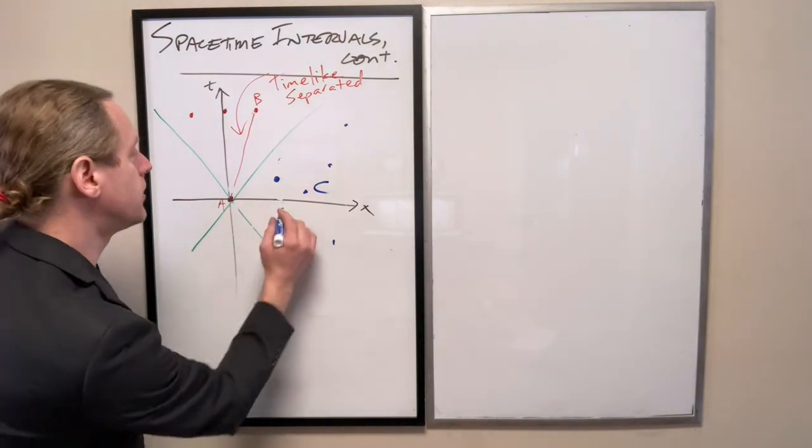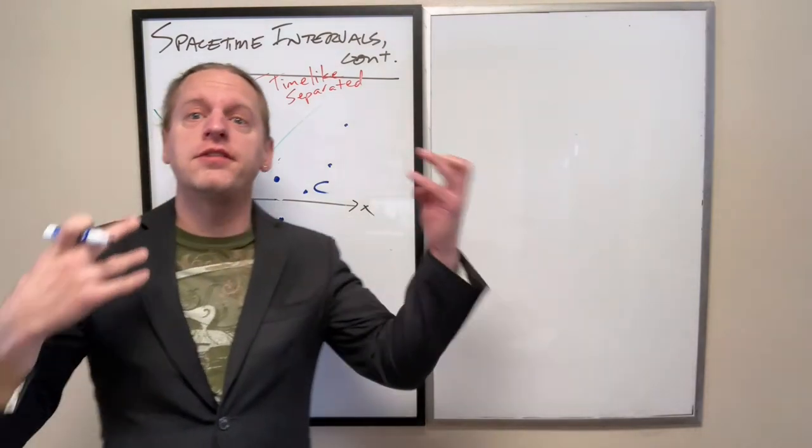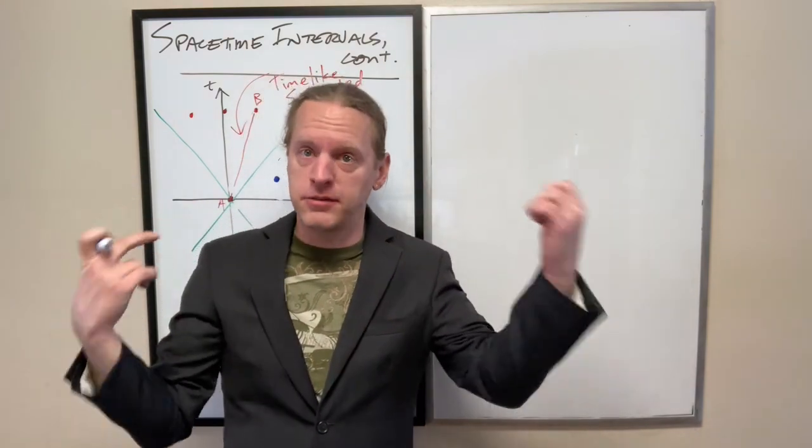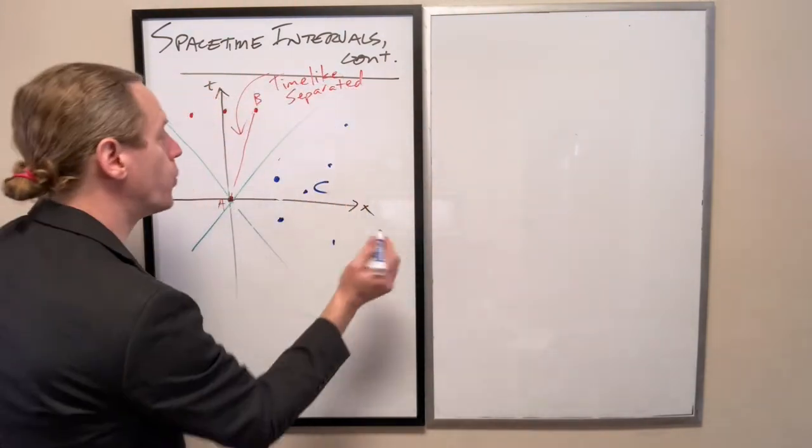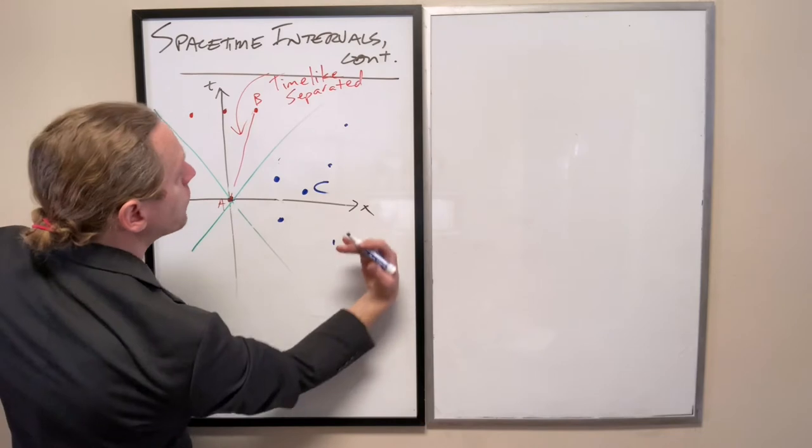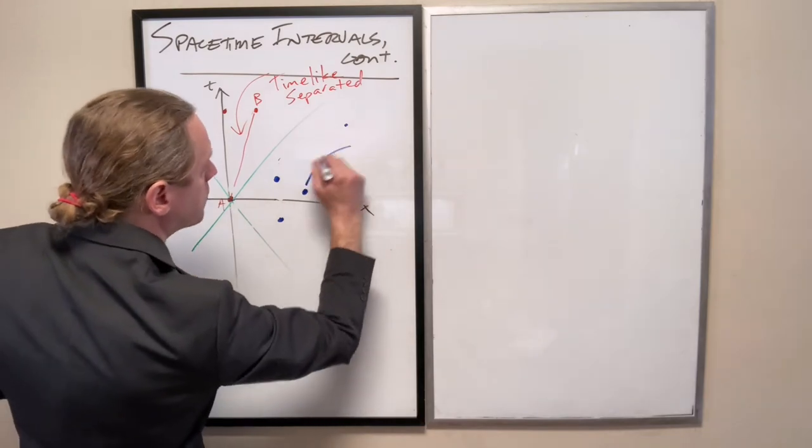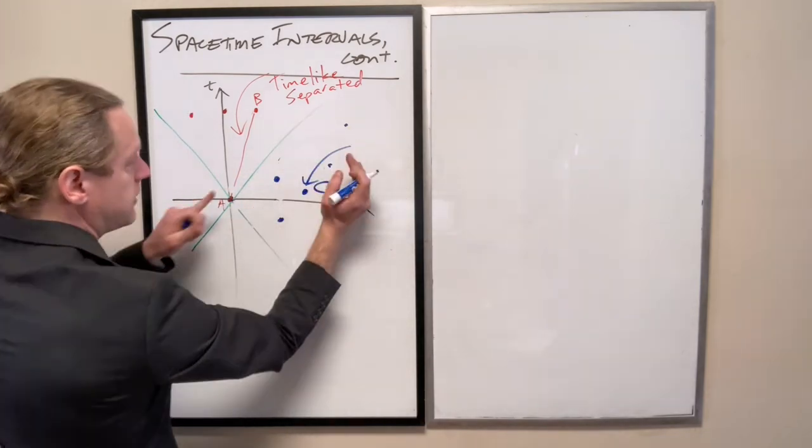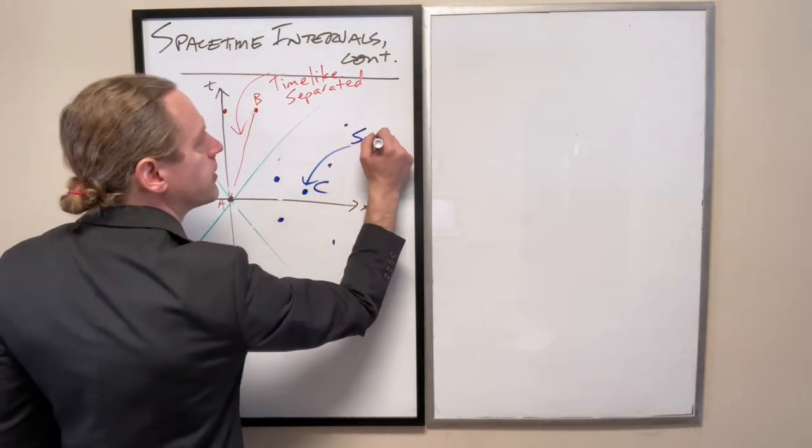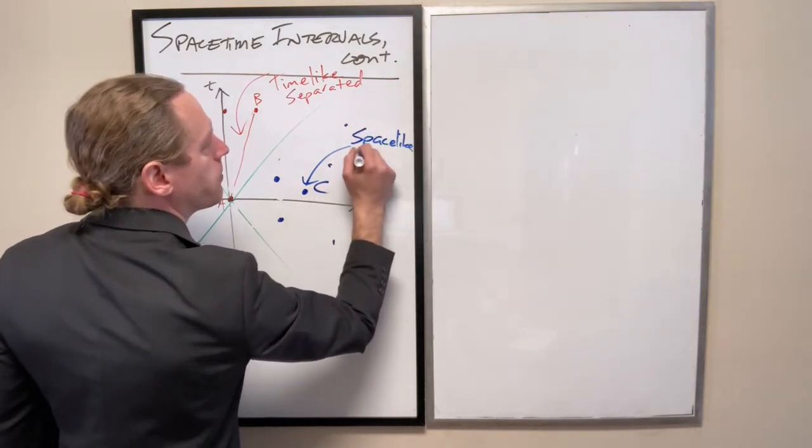And because of that, we say if they're simultaneous, they only are separated in space. So we call any pair of events outside the light cone, and not just strictly that event C, but any event C and A, we call these space-like separated.